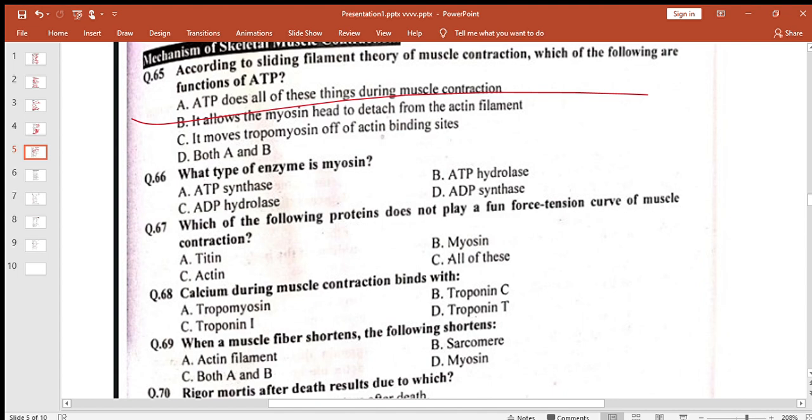What type of enzyme is myosin? ATP hydrolase. Which of the following proteins does not play role in force tension curve of muscle contraction? Titin. Calcium in muscle contraction binds with troponin C. Troponin inhibitory, troponin C ke saath humare pas bind hota hai.